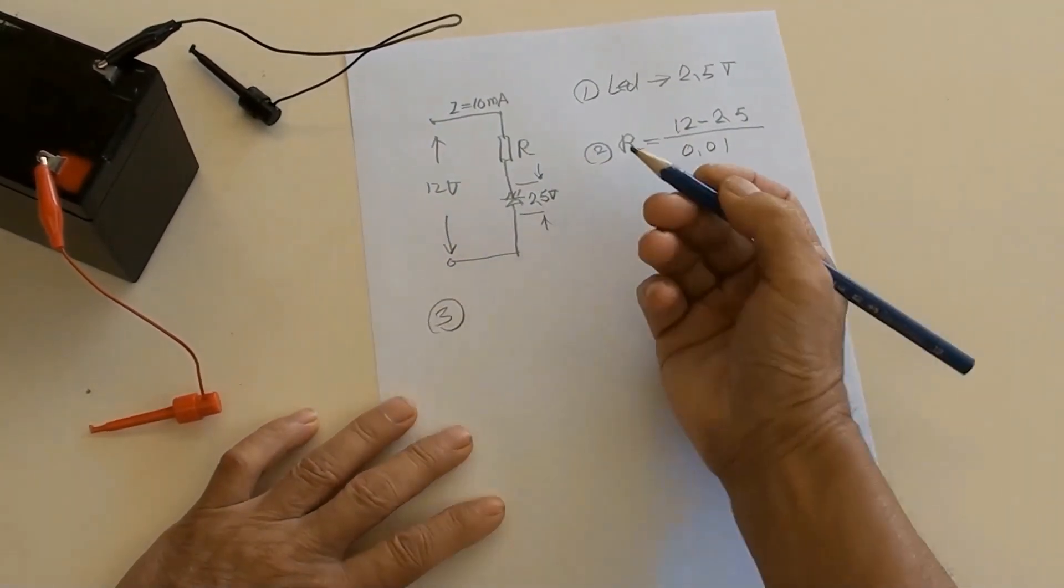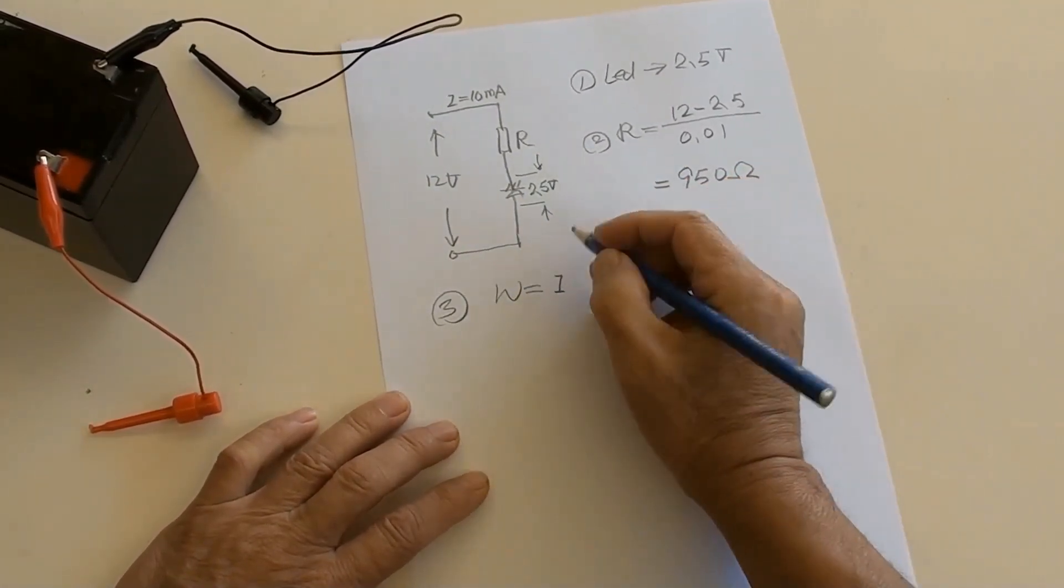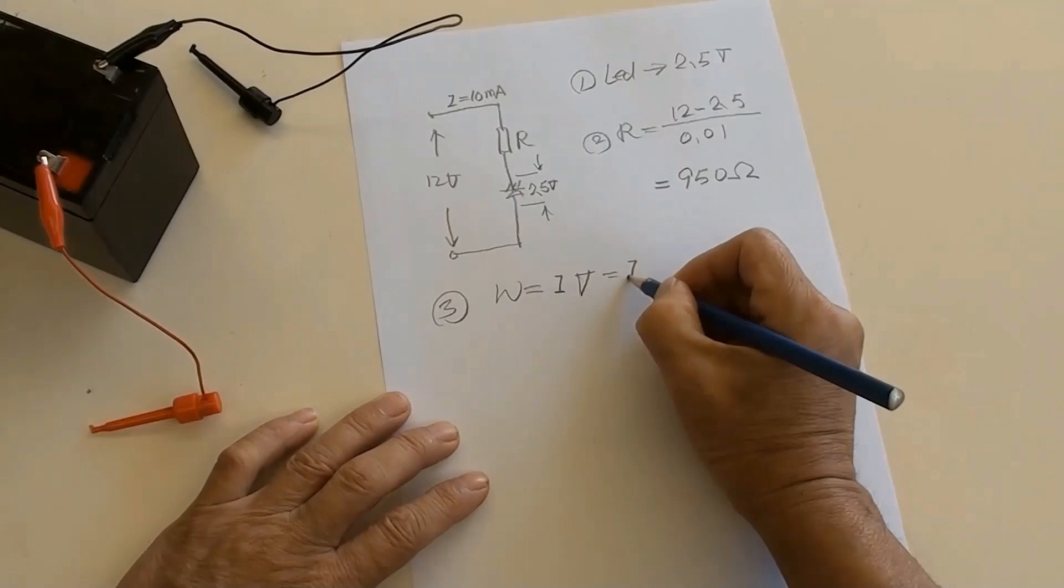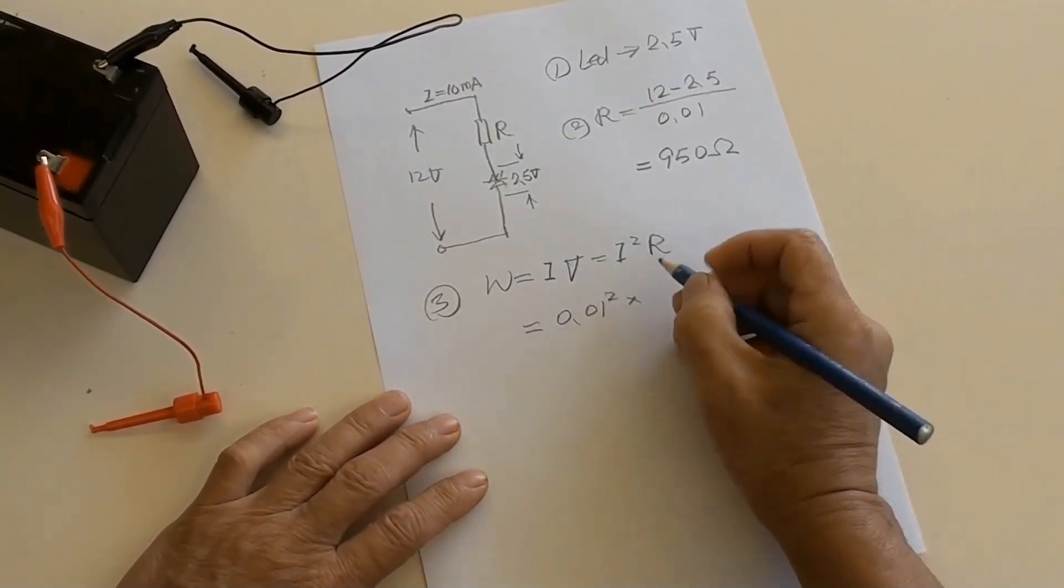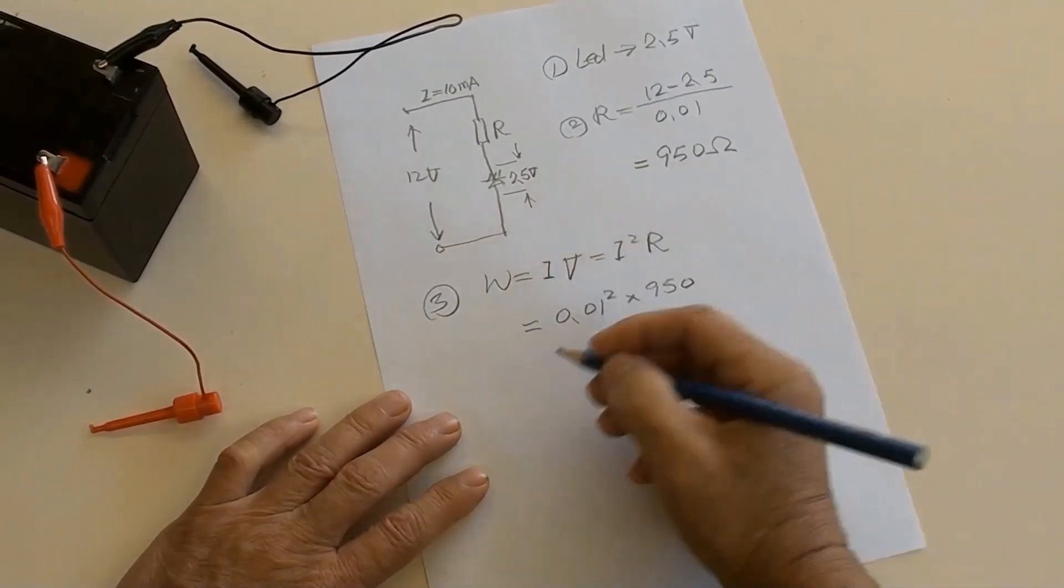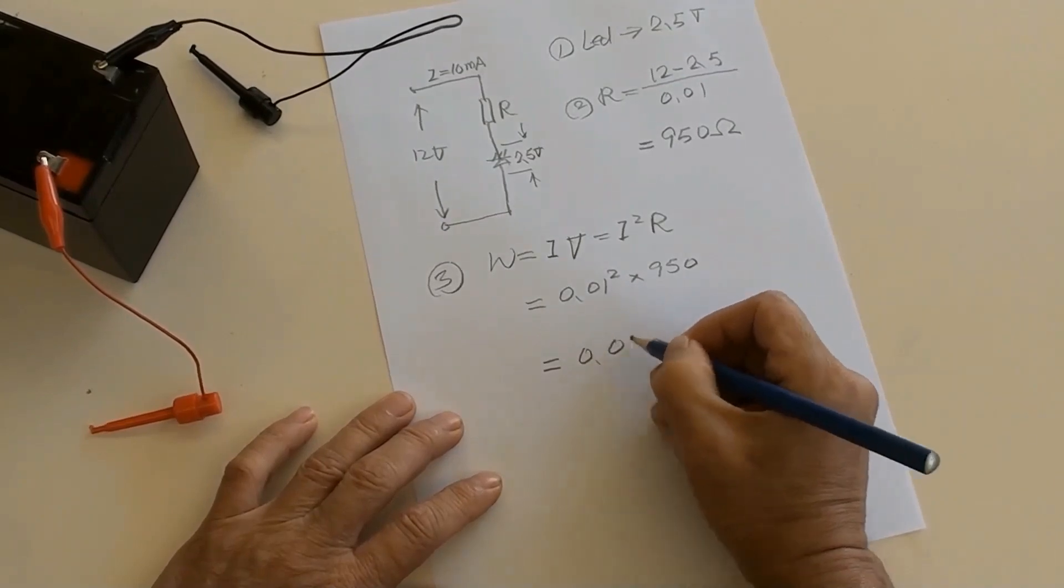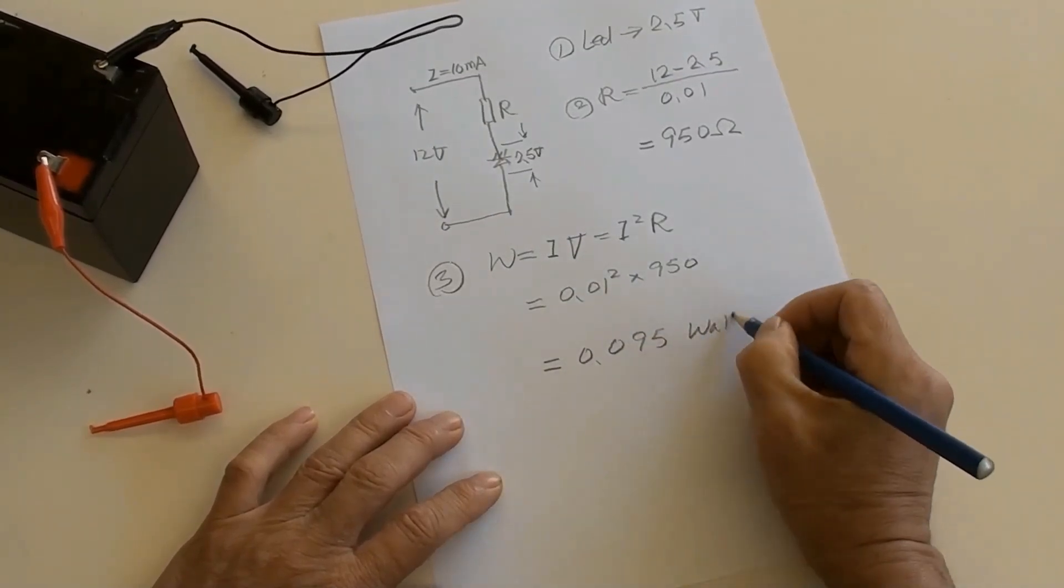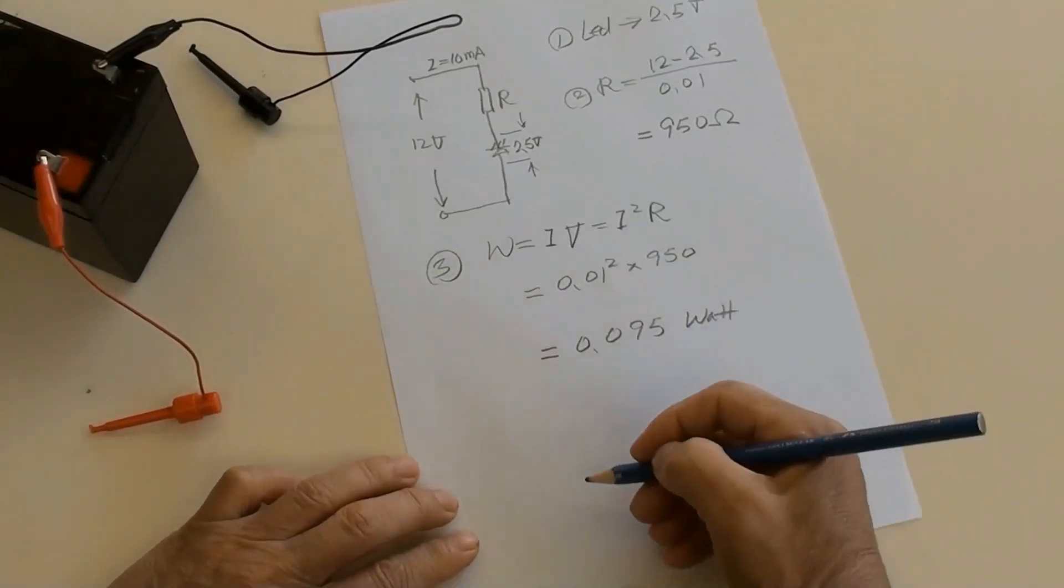Third, resistors dissipation equals I times V equals I square times R, equals 0.01 square times 950 equals 0.05 watt. So one quarter watt resistor can be chosen.